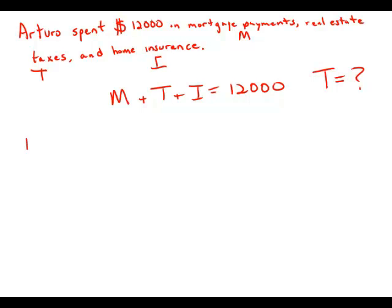Well, statement number one tells us last year the total amount that Arturo spent on real estate taxes and home insurance was 33% of the amount that he spent on mortgage payments. So taxes plus insurance equals 33 and a third percent, which is actually just equal to the fraction one third, one third of mortgage payments.